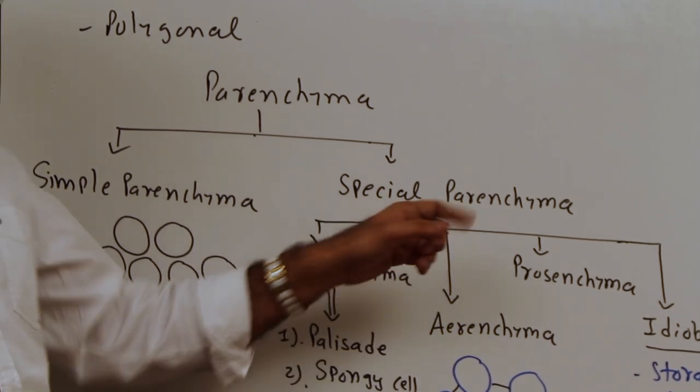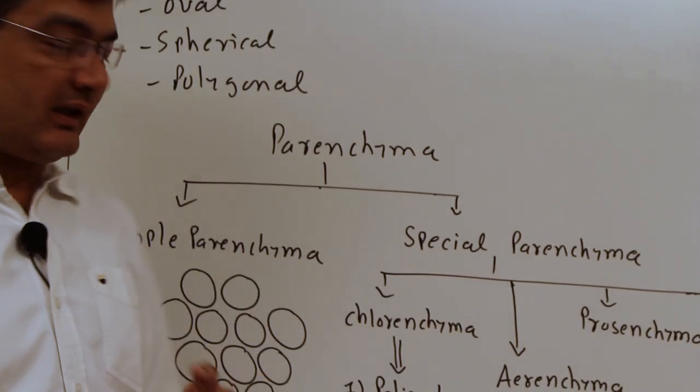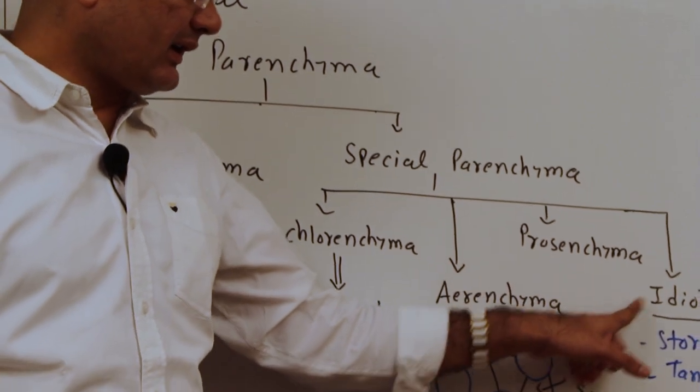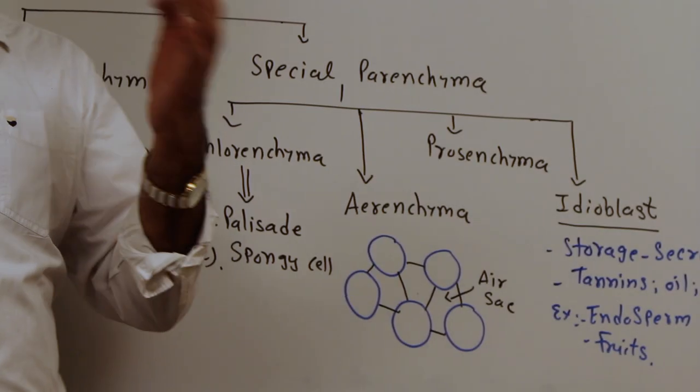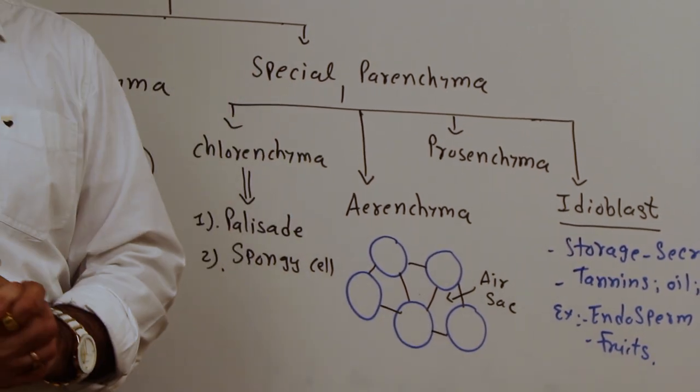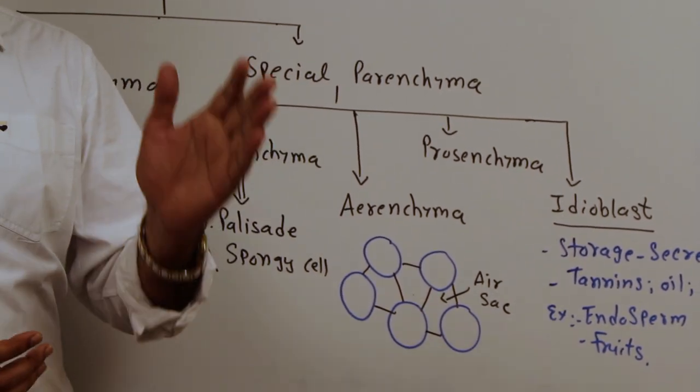Let's talk about special parenchyma. In special parenchyma, chlorenchyma, aerenchyma, prosenchyma, and idioblast are found. Chlorenchyma is a specialized kind of parenchyma. It is found in the mesophyll of the leaf which contains chloroplasts.